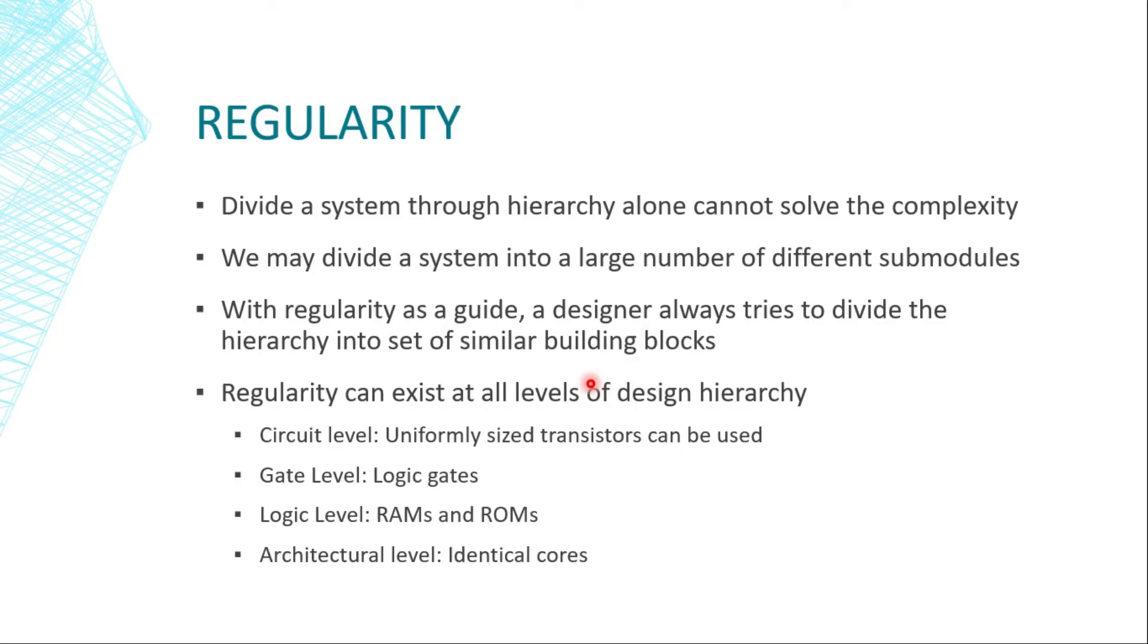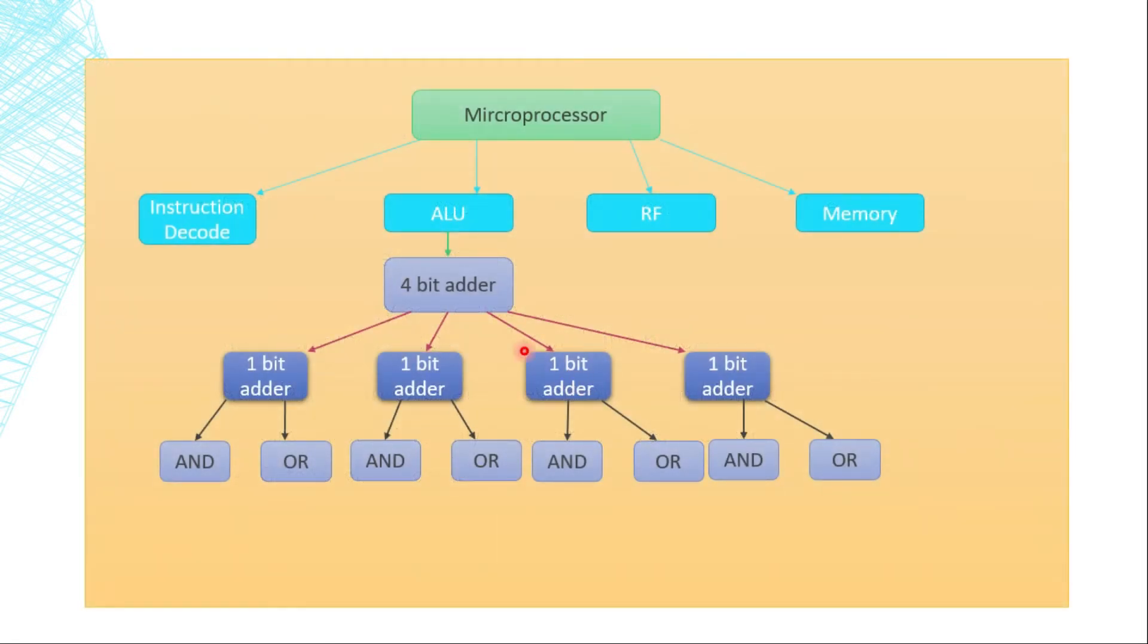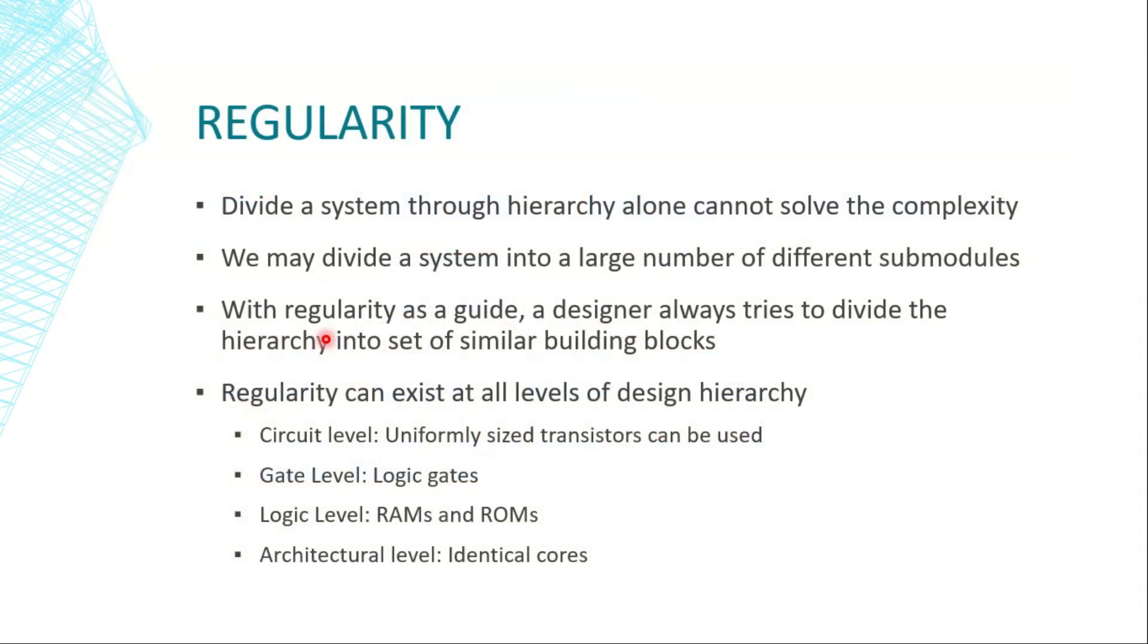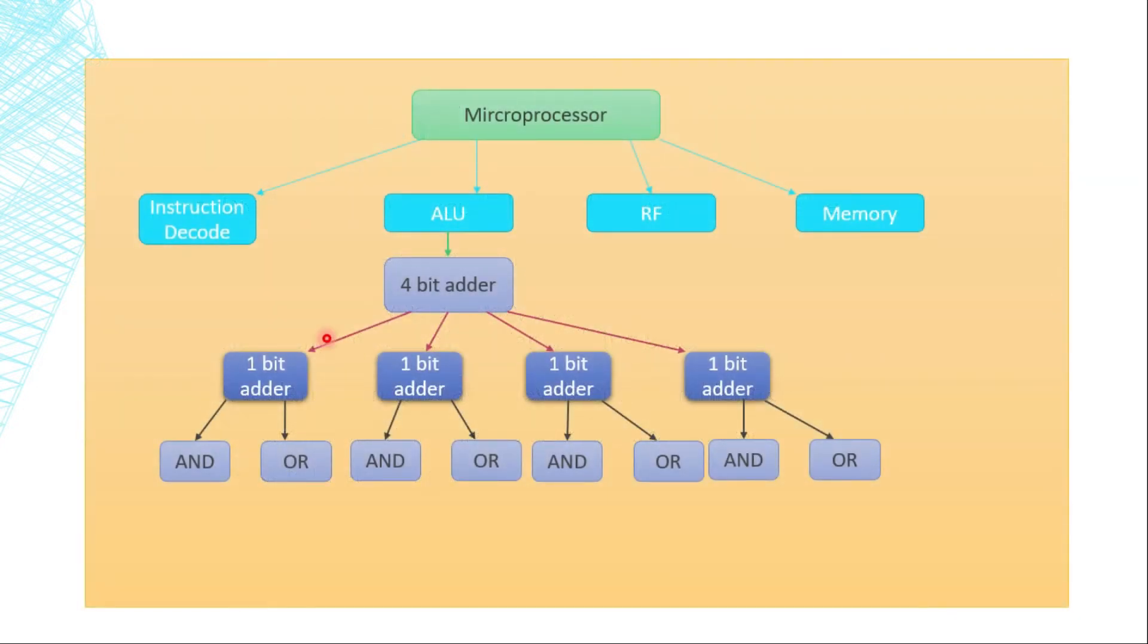The second concept in this approach is regularity. Dividing a system through hierarchy alone cannot solve the problem of complexity. The reason is we may divide a system into a large number of different sub-modules. We are giving a constraint: divide a system into hierarchies or sub-modules so that they are similar building blocks. If you see here a 4-bit adder is divided into 4 1-bit adders.